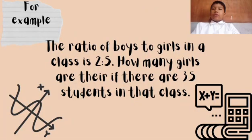The ratio of boys to girls in a class is 2 is to 5. How many girls are there if there are 35 students in that class?